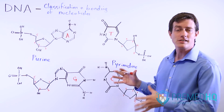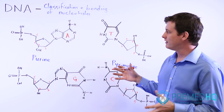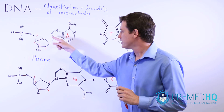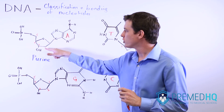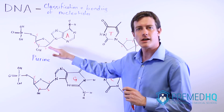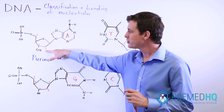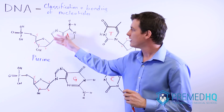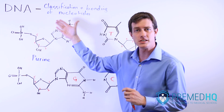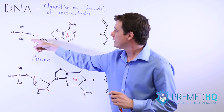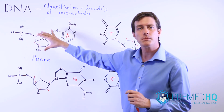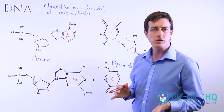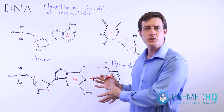Now that we've discussed the basic structure of a nucleotide, which has its nitrogenous base, its five-membered sugar — in this case it's deoxyribose because it doesn't have the OH on carbon-2, and we know that it's deoxy because this is a discussion about DNA — and then the third component, which is a phosphate group. Now we can get into the different types of nucleotides that you'll encounter in DNA.